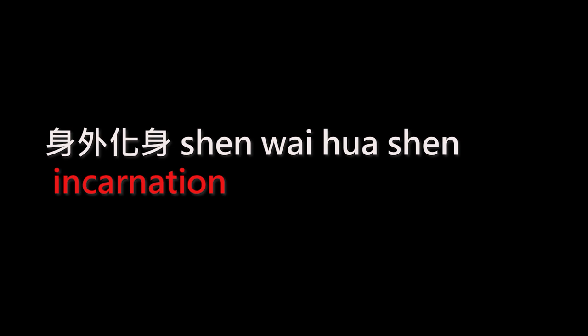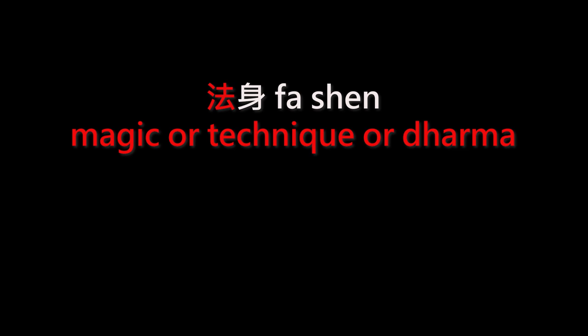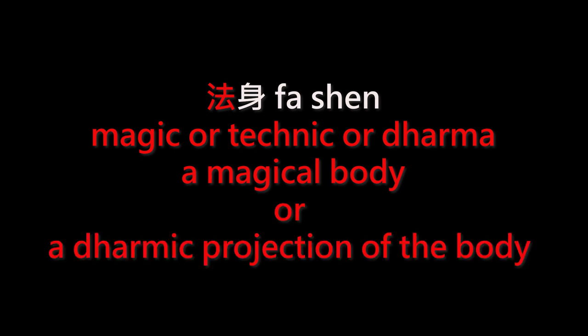There are a few other terms that come up in regard to clones. For example, there is shen wai hua shen — this was pointed out by Invader, and I've seen this in my novels as well. Literally: hua shen is the incarnation I mentioned before, and shen wai shen means your body outside — wai means outside — so shen wai hua shen basically means an incarnation outside of your body. The way I've seen that used sometimes is more of like a projection of a person as opposed to making a copy of themselves. There's also fa shen. Fa can mean a lot of different things: it can mean magic, technique, or the dharma — we're getting into religious terms similar to the Tao — and combined with shen it means a magical body or a dharmic projection of the body.